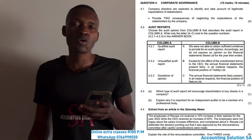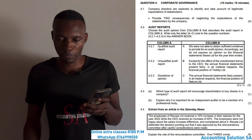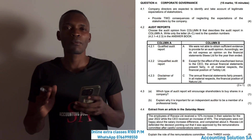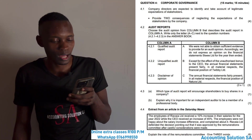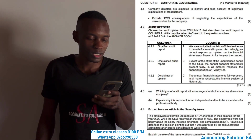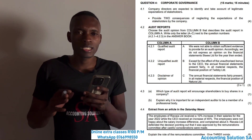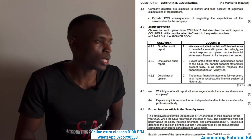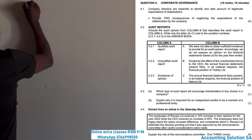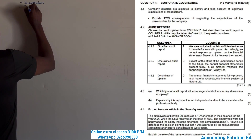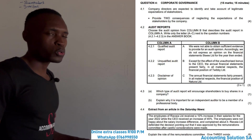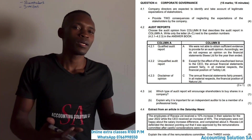Let's start. This question is on corporate governance. We want to understand 4.1: company directors are expected to identify and take account of the legitimate expectations of the stakeholders. First, let's understand who the stakeholders are. The most two important ones are: number one, shareholders, and number two, investors. These are the most important stakeholders, along with employees and other people.